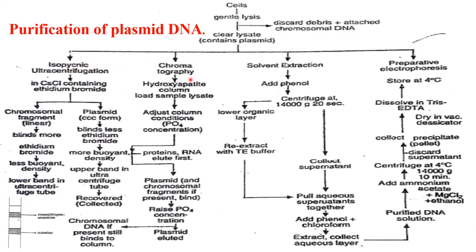For chromatography, a hydroxyapatite column is used. Load the sample lysate onto the hydroxyapatite column and adjust column conditions using phosphate (PO4) concentration. Protein and RNA elute first. Plasmid and any chromosomal fragments present will bind to the column. The plasmid is then eluted by raising the PO4 concentration, while chromosomal DNA contamination, if present, remains bound to the column. By increasing the PO4 concentration appropriately, the plasmid can be eluted from the column.